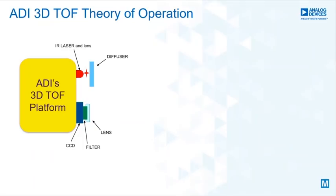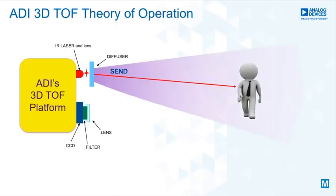The basic working principle of a time of flight system is quite simple. The object is illuminated by a source, in this case the IR laser, and then the reflected light is captured by the sensor.